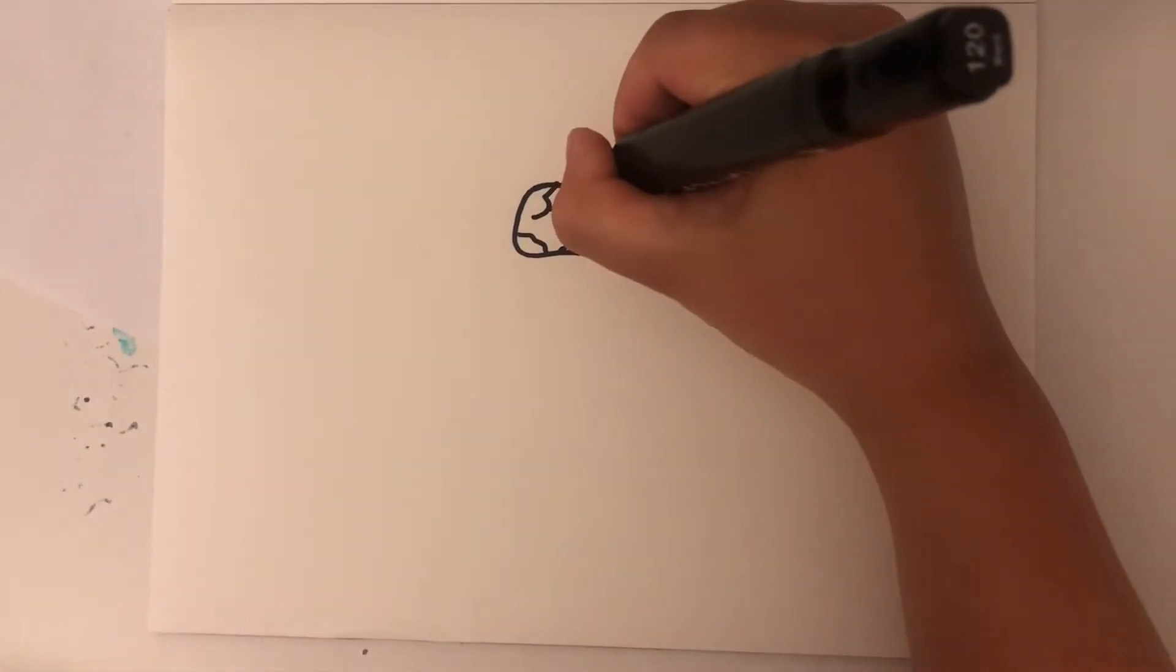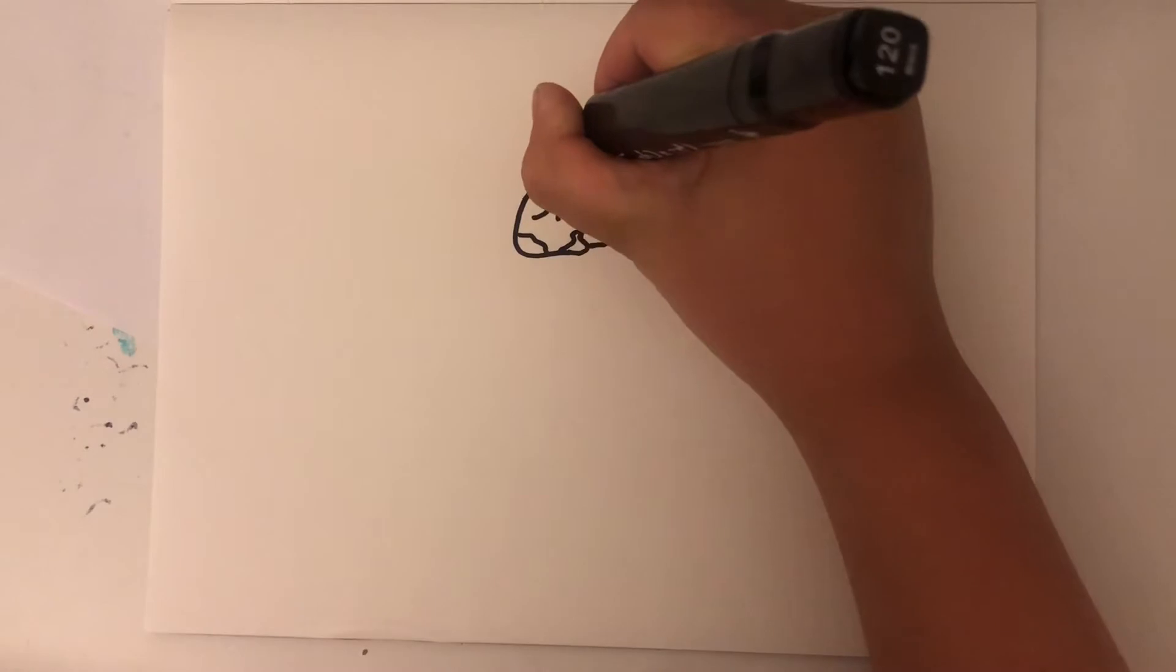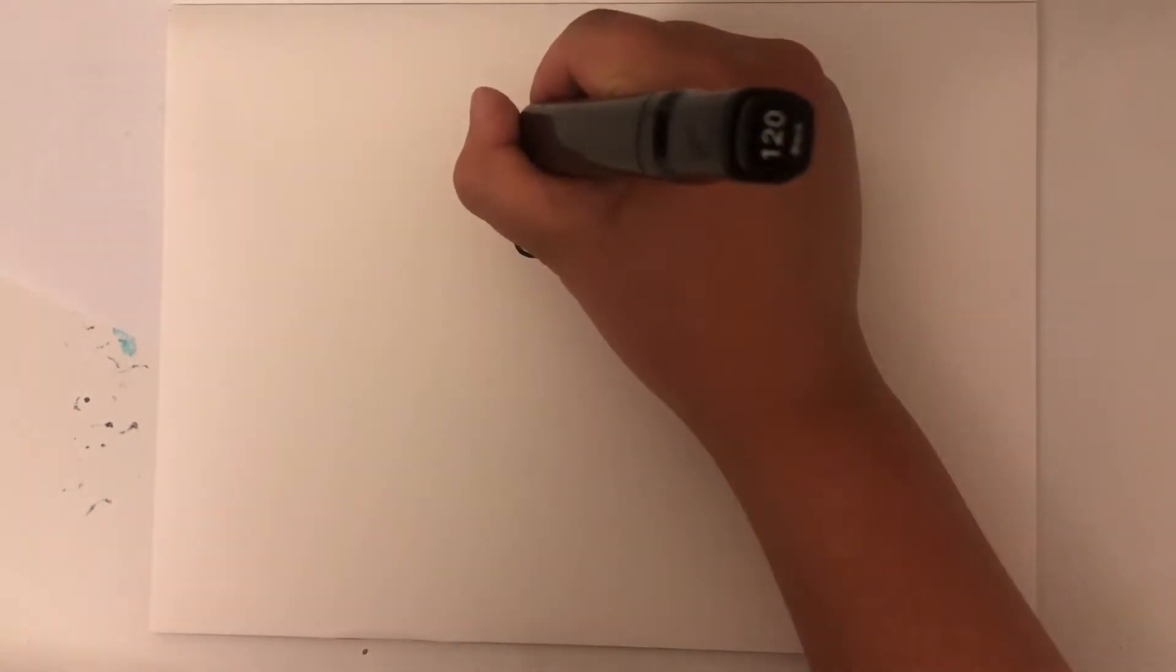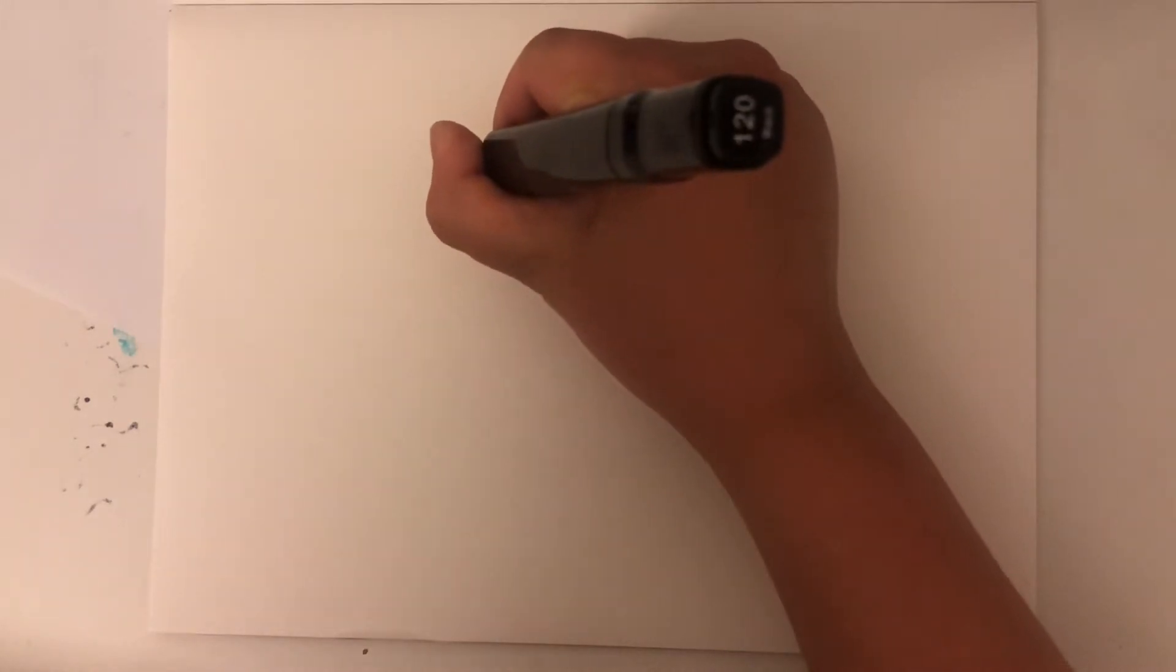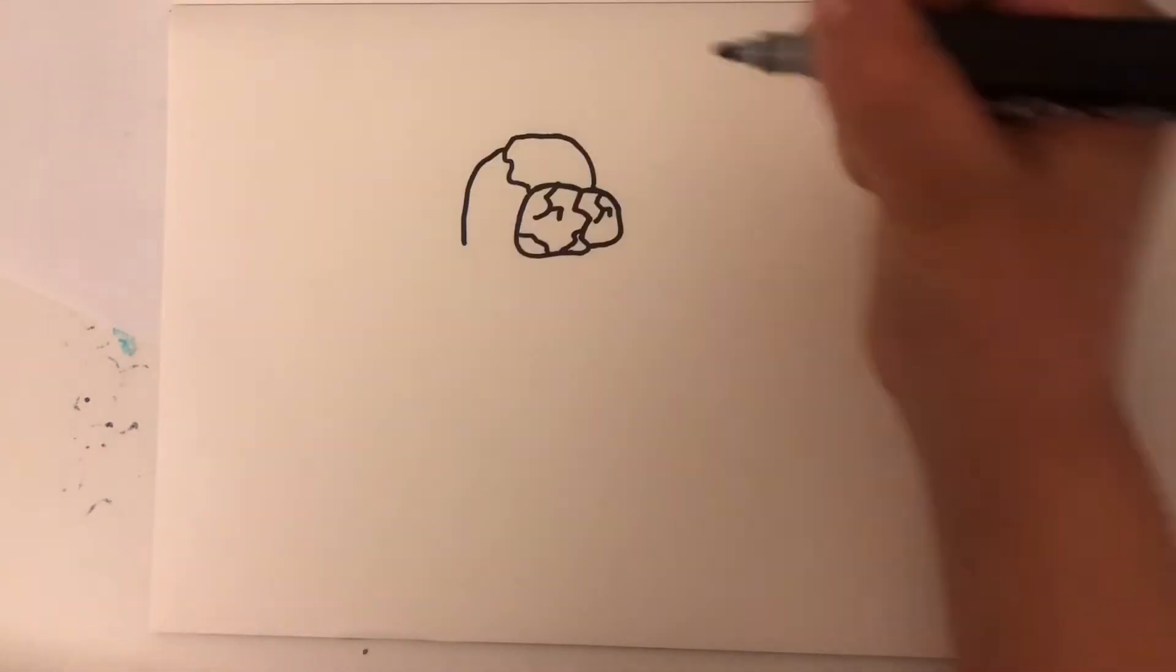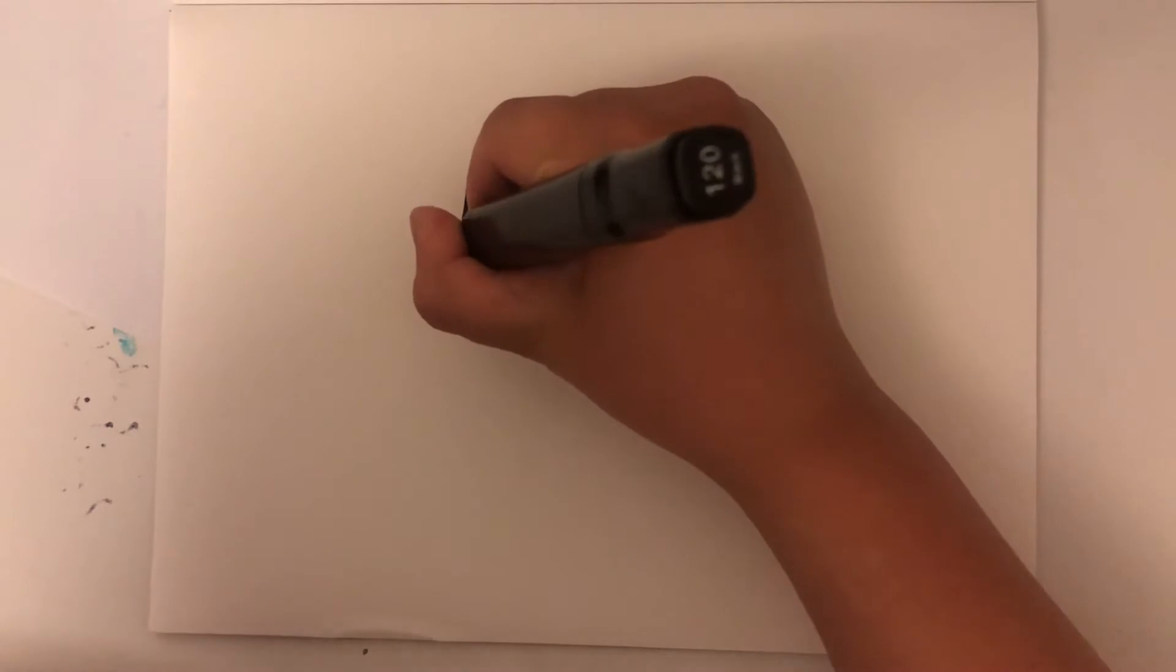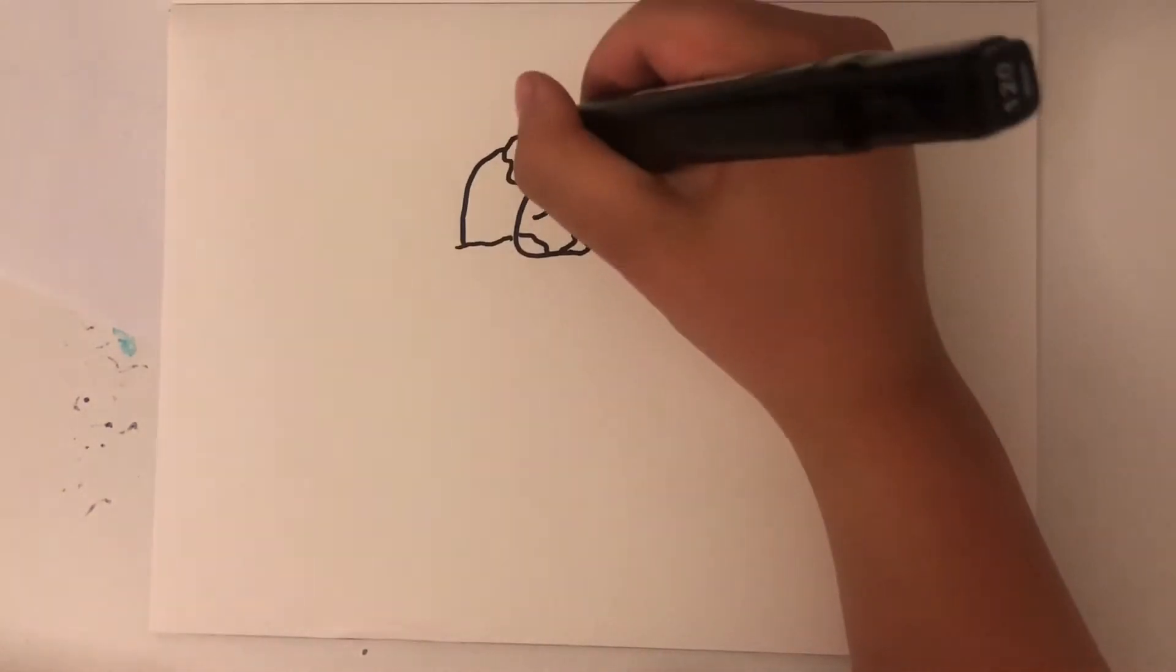Then you can draw his head and do the same thing with his head. Don't draw his head whole. Leave a little space. And then you can draw the skull. Then you can continue drawing his real skin.